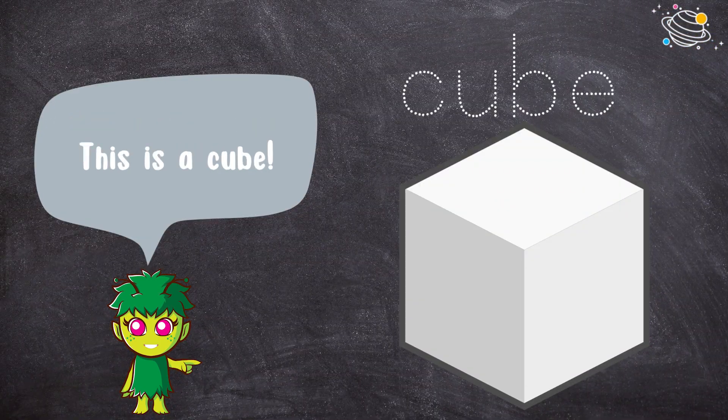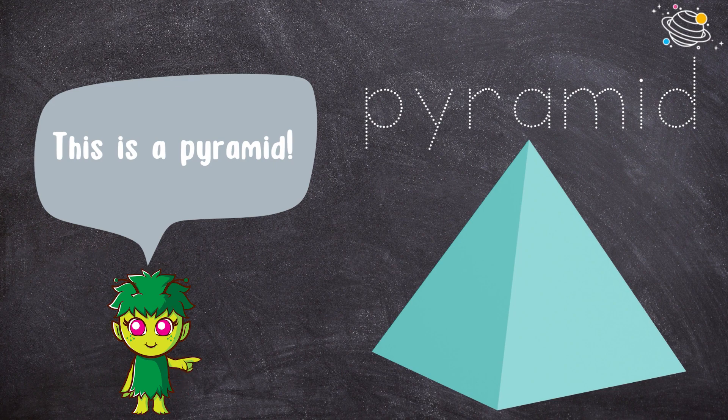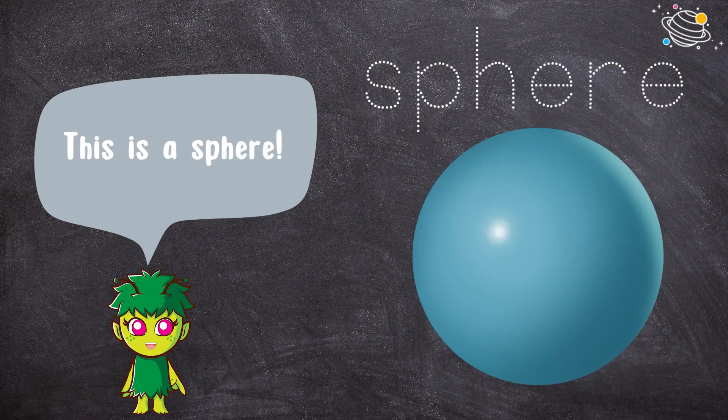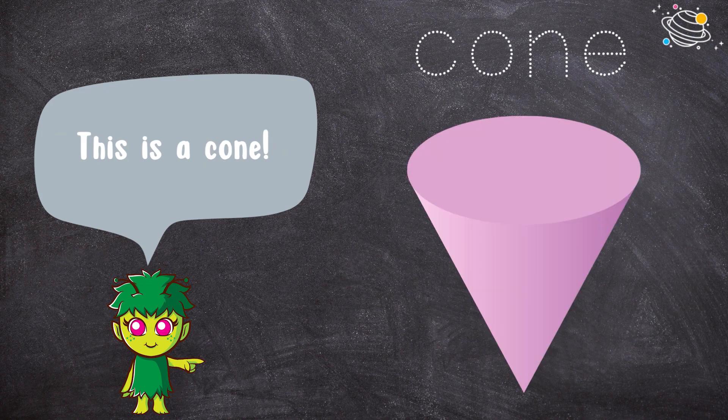This is a cube. This is a cuboid. This is a pyramid. This is a sphere. This is a cylinder. This is a cone.